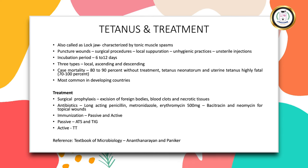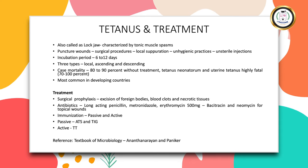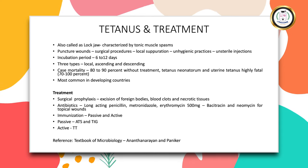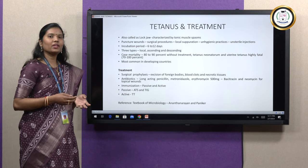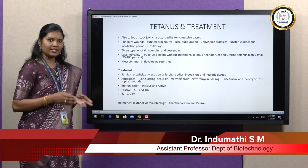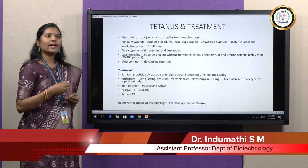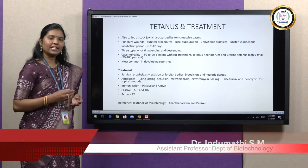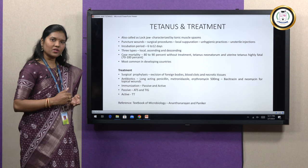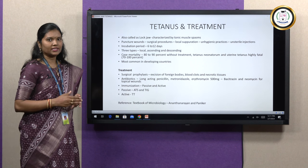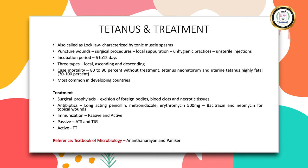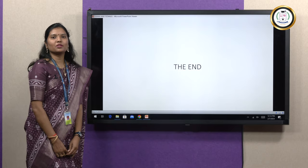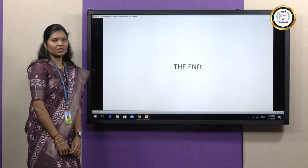For active immunization, tetanus toxoids are used — the toxin is allowed to react with formaldehyde to be toxoided. Tetanus vaccines are also given as TT injections (tetanus toxoids) or as trivalent preparations like DPT — diphtheria, pertussis and tetanus vaccines. The reference for this presentation is taken from the Textbook of Microbiology by Ananthanarayan and Paniker. Thank you students for patiently watching this.